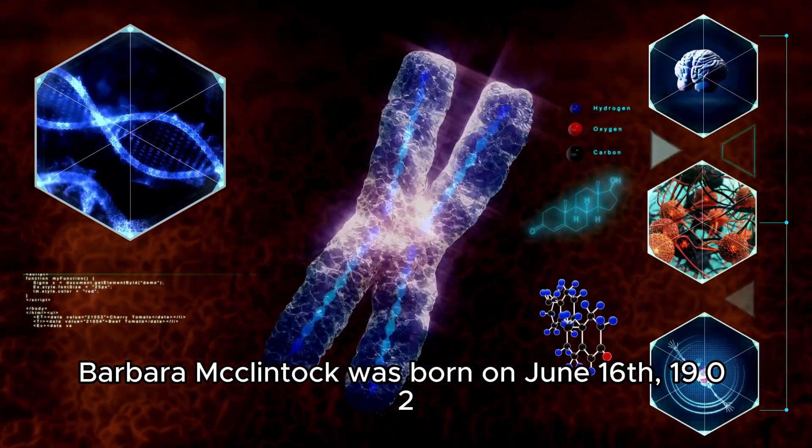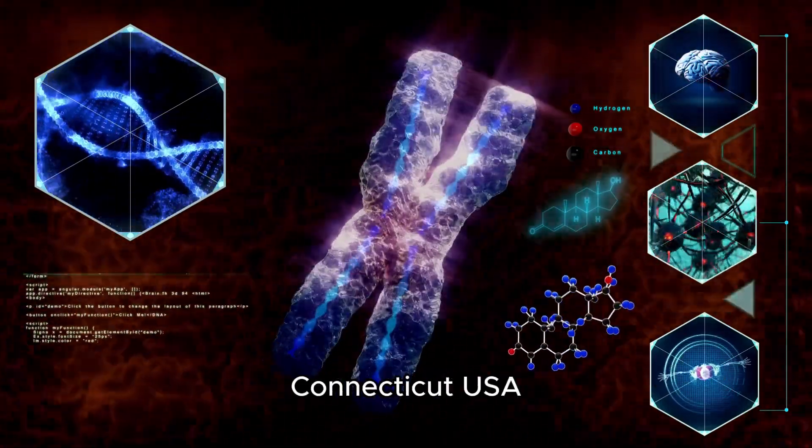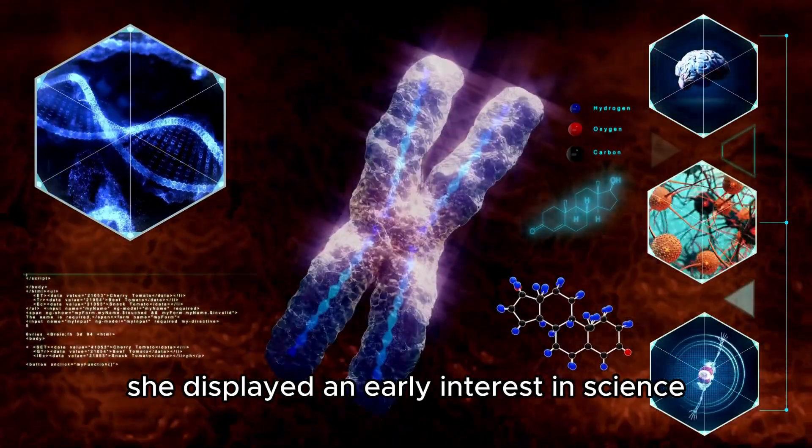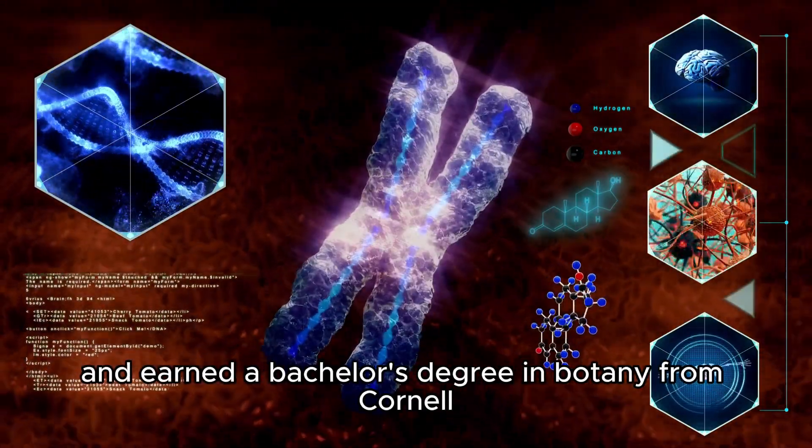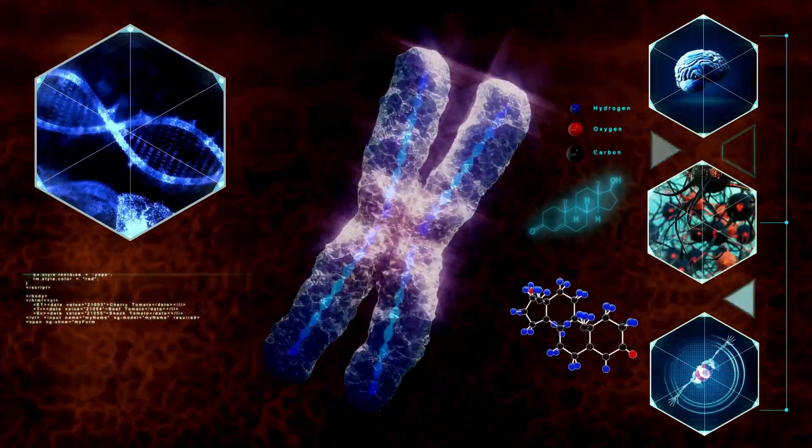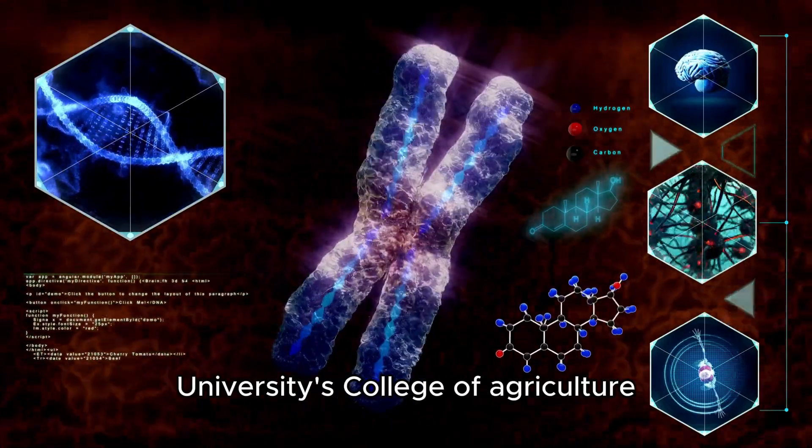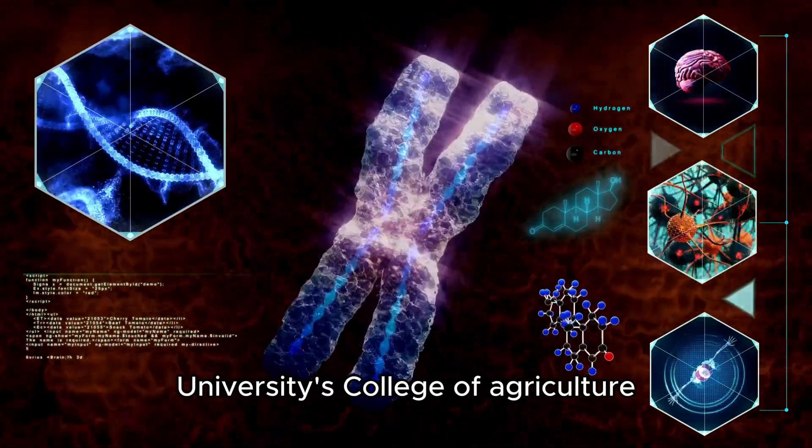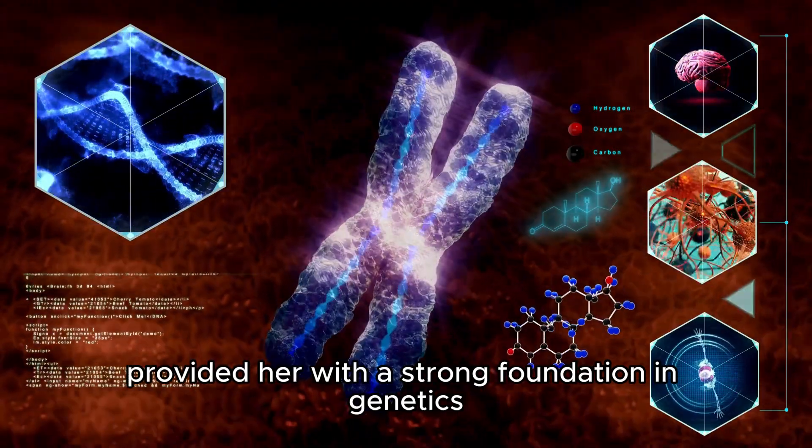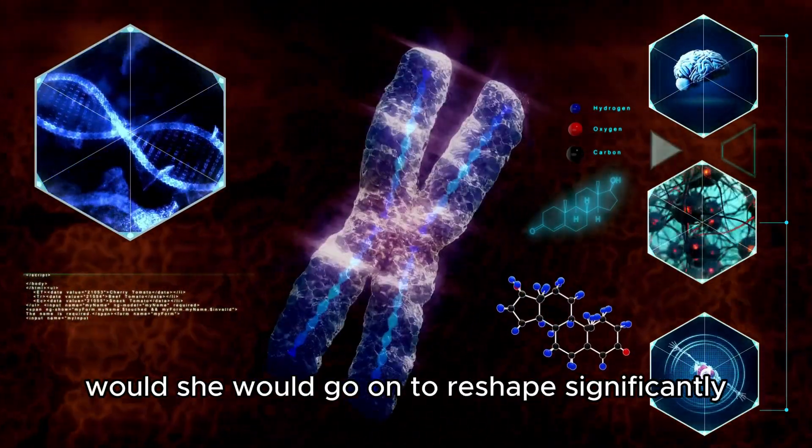Barbara McClintock was born on June 16, 1902, in Hartford, Connecticut. She displayed an early interest in science and earned a bachelor's degree in botany from Cornell University and a Ph.D. in cytology from Cornell University's College of Agriculture. Her educational background provided her with a strong foundation in genetics, which she would go on to reshape significantly.